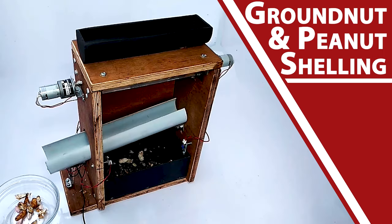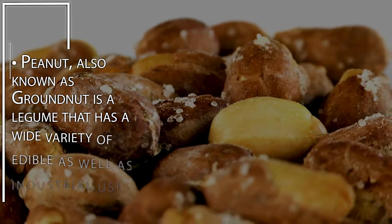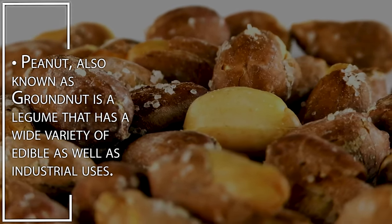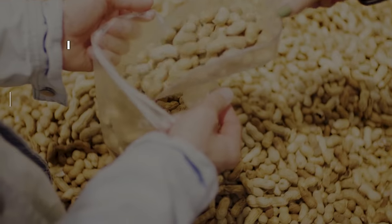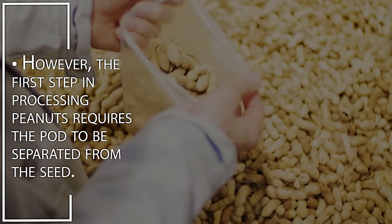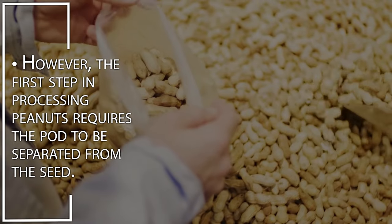Groundnut and Peanut Shelling. Peanut, also known as groundnut, is a legume that has wide variety of edible as well as industrial uses. However, the first step in processing peanut requires the pod to be separated from the seed.